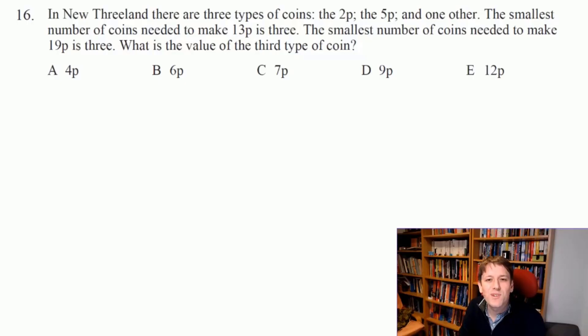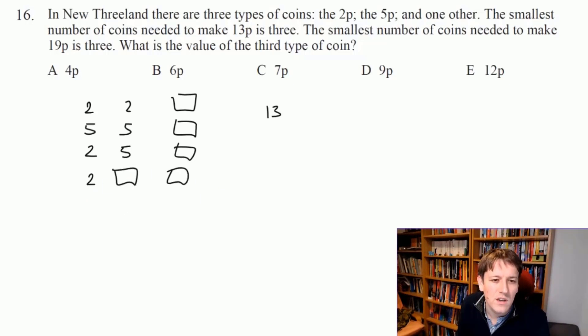Right, it says in New Threeland there are three types of coins: the 2p, the 5p, and one other. The smallest number of coins needed to make 13p is three, and the smallest number of coins needed to make 19p is three. What is the value of the third type of coin? So I could think about the possibilities here. If I'm going to make 13p, it can't be just three of the new coins because it's not divisible by three. But I could have like a 2 and a 2, a 5 and a 5, or a 2 and a 5, and then one of the new coins. I suppose I could also possibly have a 2 and 2 of the new coins.